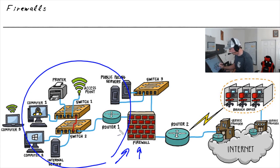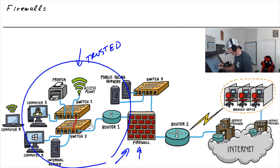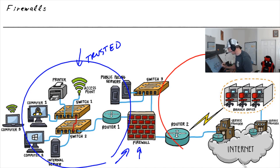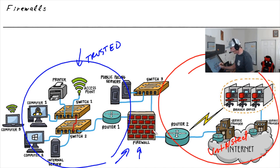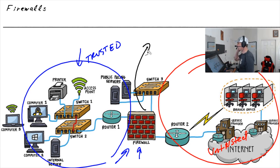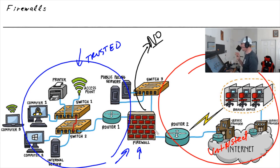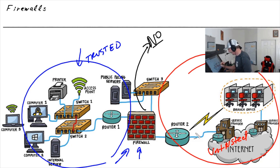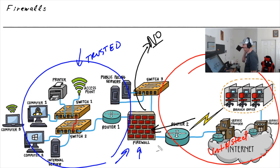In this topology, this side could be considered our trusted zone — the stuff we're trying to protect — and everything to the right could be considered untrusted or less trusted. One element of a firewall is similar to a policy I heard many years ago regarding drugs: just say no. The firewall says no to anything trying to come in from a less trusted location, like the internet or the branch office. If it's trying to come in, it just drops the traffic.